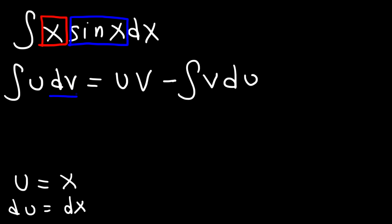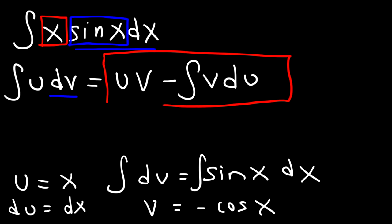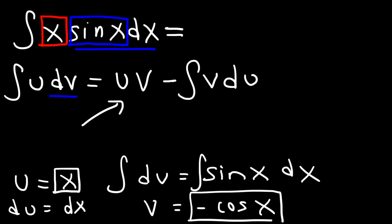Now, dv is going to be sine x with the dx as well. So if we integrate both sides, the integral of dv will give us v, and the integral of sine is negative cosine x. Now that we have this, we can use the right side of this equation. So the integral of x sine x dx is going to be u times v. We know u is x, v is negative cosine x, so that's going to be negative x cosine x, and then minus the integral of v du.